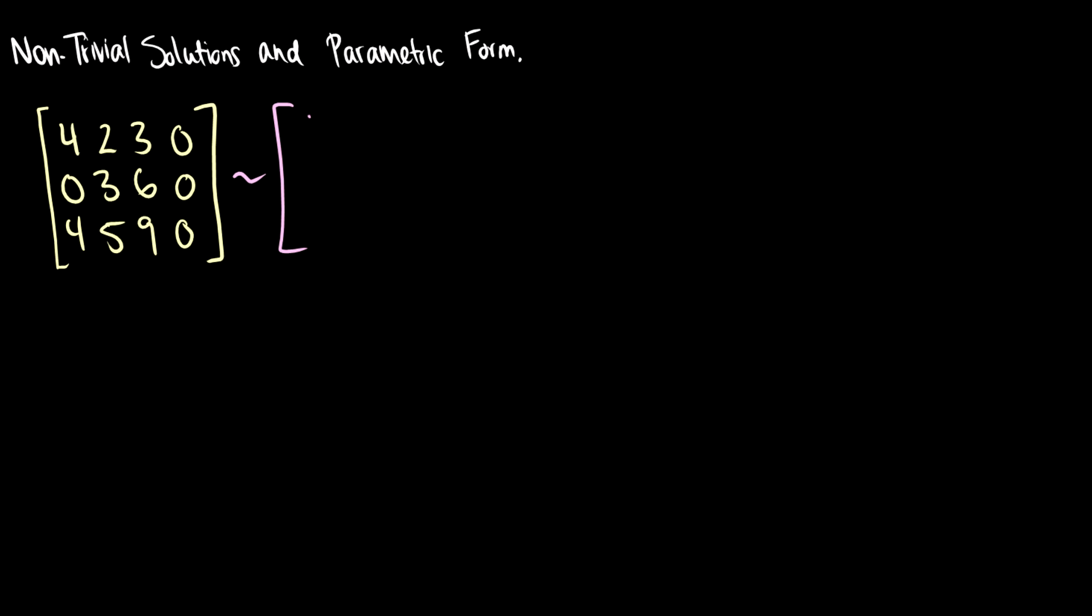We're going to leave the first one the same: 4, 2, 3, 0. Let's divide the second row by 3. So we're going to get 0, 1, 2, 0. And this last row, let's subtract the first. So 4 minus 4 is 0, 5 minus 2 is 3, 9 minus 3 is 6, and then we get 0. So let's row reduce further. 4, 2, 3, 0. 0, 1, 2, 0.